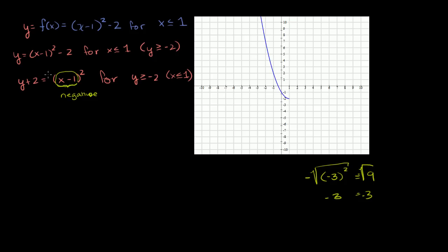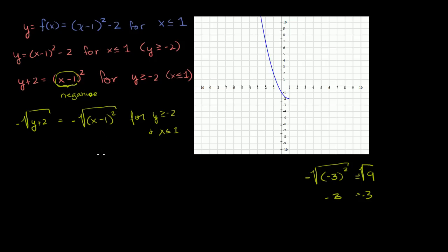So we take the negative square root of both sides: -√(y + 2) = -√((x - 1)²), for y ≥ -2 and x ≤ 1. The negative square root of (x - 1)² is just (x - 1), because (x - 1)² is a positive quantity, and the negative root gives us the negative number we square to get it — which is exactly (x - 1).